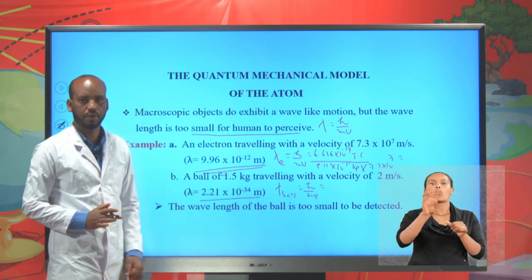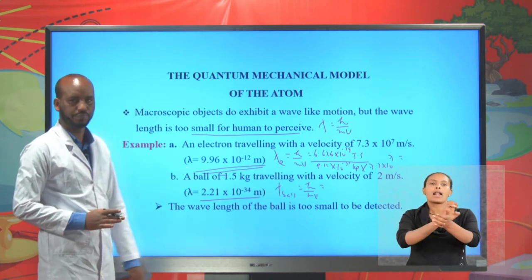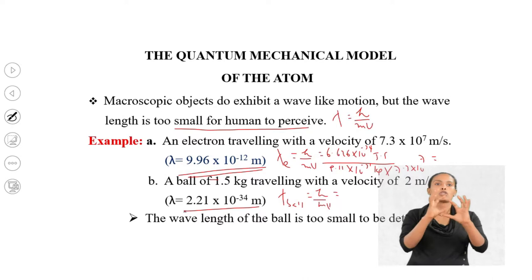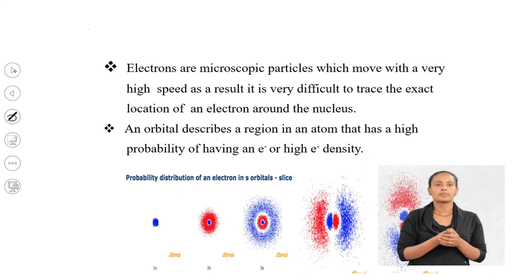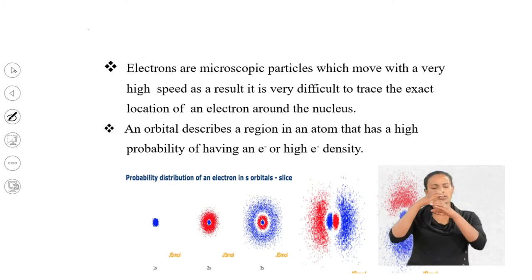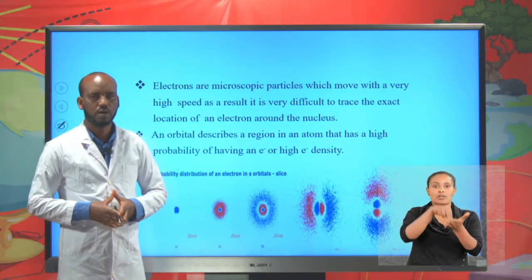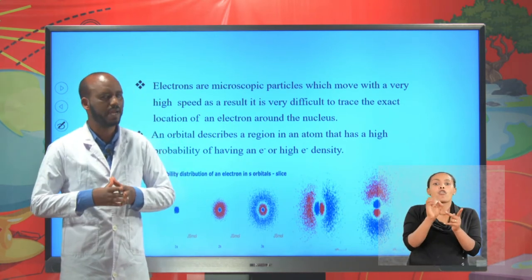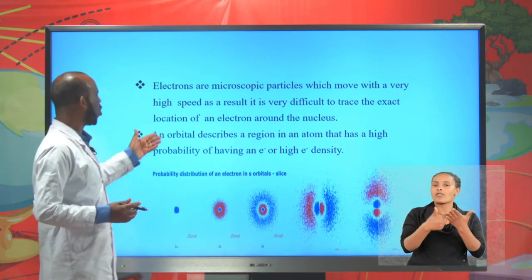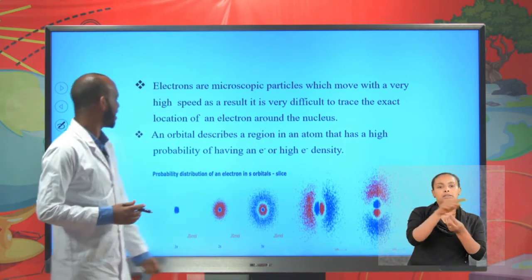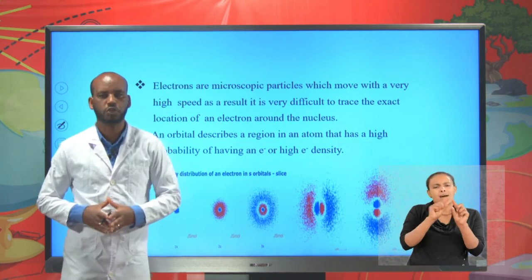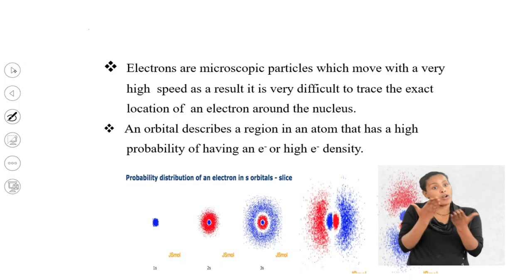Comparing the two wavelengths, the wavelength of the ball is far smaller than that of the electron and too small to be detected. Electrons are microscopic particles which move with very high speed, making it very difficult to trace the exact location of an electron around the nucleus. Therefore, an orbital describes a region in an atom with a high probability of having an electron — it is a particularly shaped volume of space where the probability of finding an electron is high.